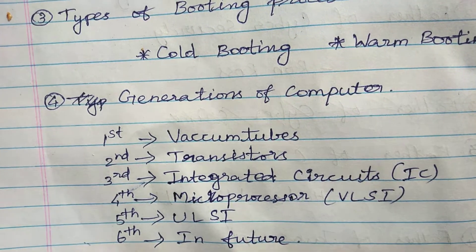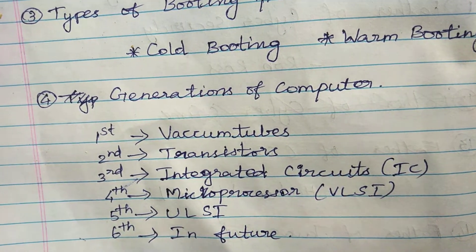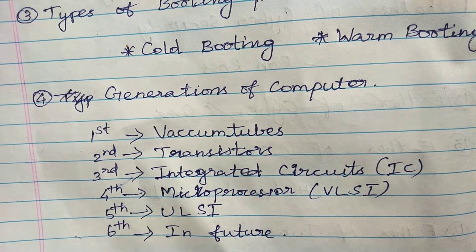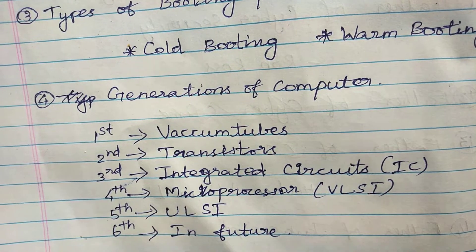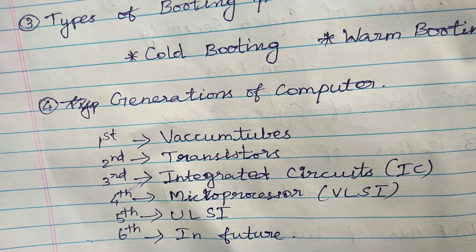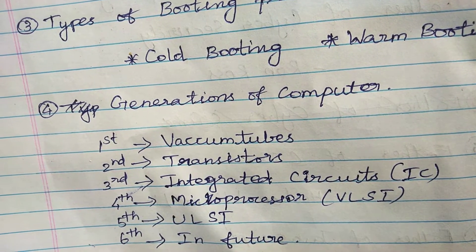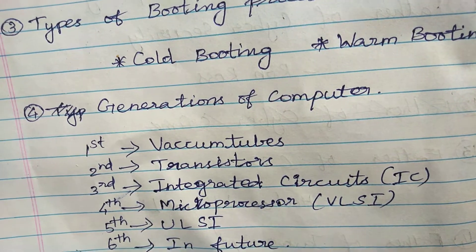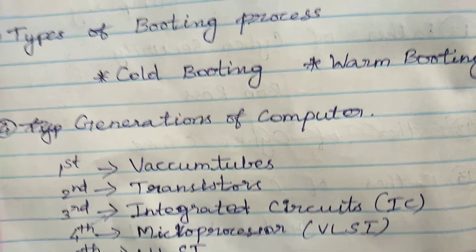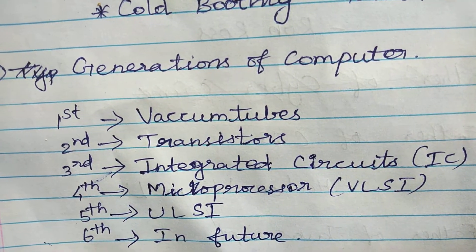First generation uses vacuum tubes. Second generation uses transistors. Third generation uses integrated circuits (IC). Fourth generation uses microprocessors with VLSI. Fifth generation uses ULSI.